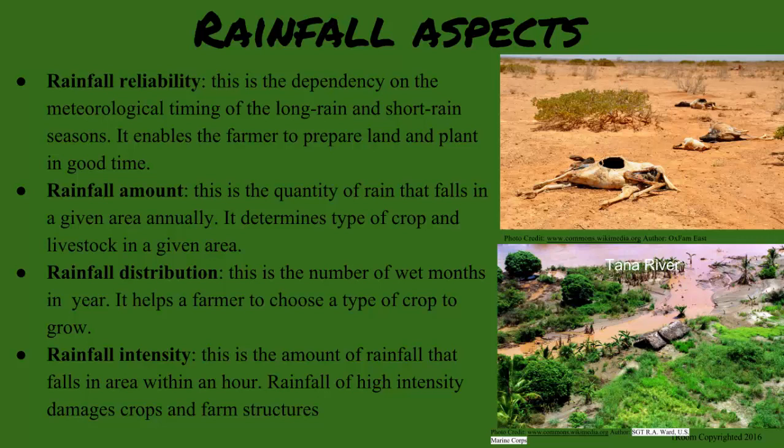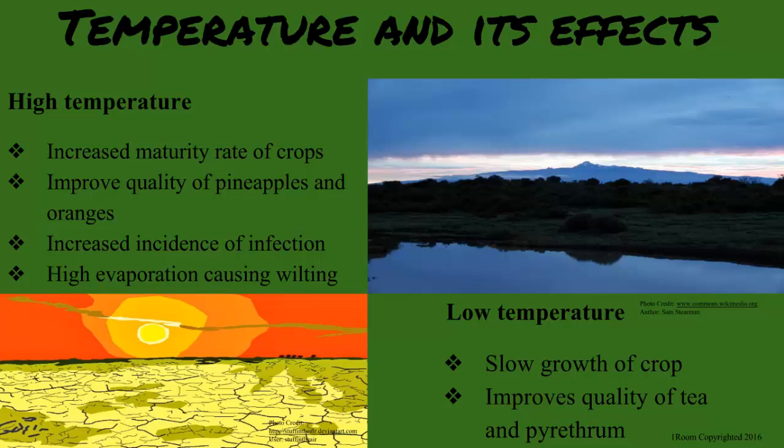So the more rain, the better? Not always, but that depends on the plant. A higher rainfall intensity could result in flooding and damage to the soil and crops. In the dry areas of Kenya, it always seems so hot. How do those plants work in such an environment? Well, temperature is another factor to consider when choosing what crop to grow. Pineapples and oranges, for example, do very well in high temperature areas, but these will come with an increase in evaporation rates leading to wilting of crops and an increase in incidences of disease and plant infection.